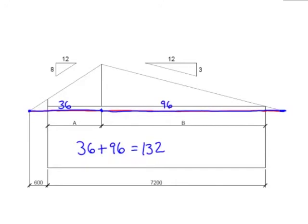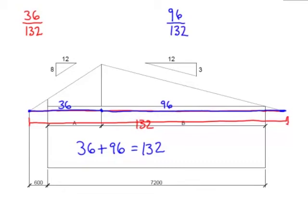I have 132 total units of run across the bottom. That includes overhang. On the left side, or A side, 36 out of those 132 units are used up. And on the right side, 96 out of those 132 units are used up. So right off the bat, I can convert these fractions to a decimal. And what I end up with is 36 divided by 132 is 27.3%. And on the right side, I end up with 72.7%.